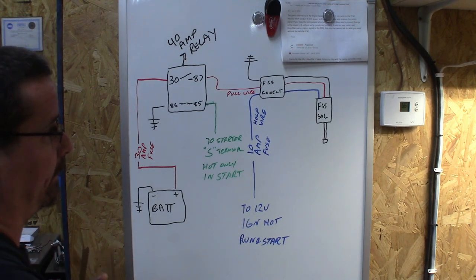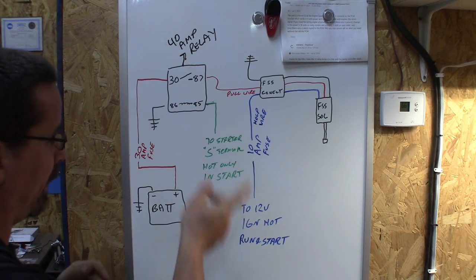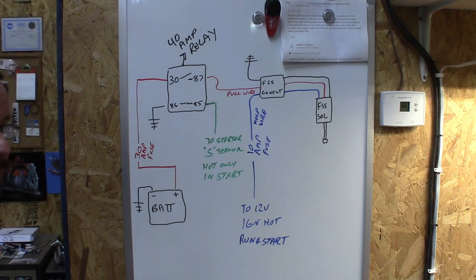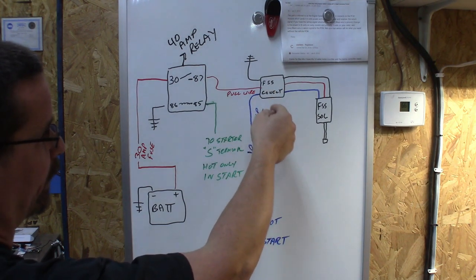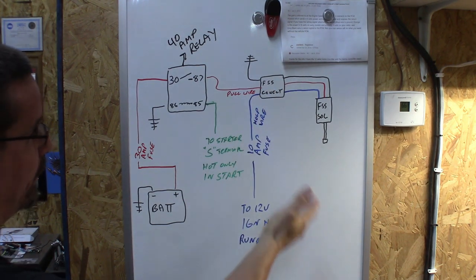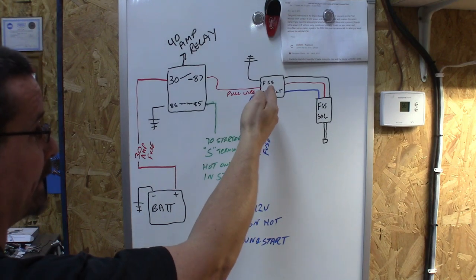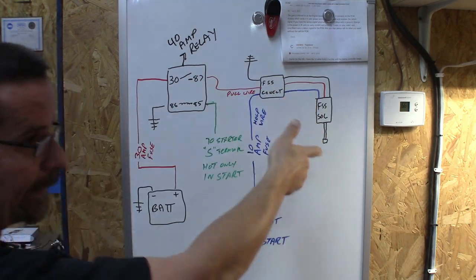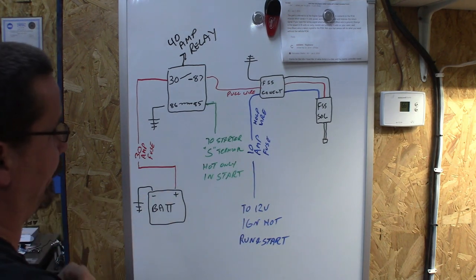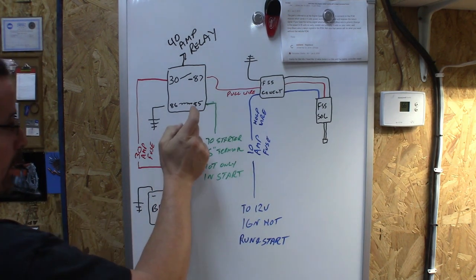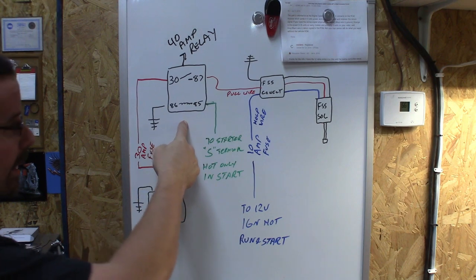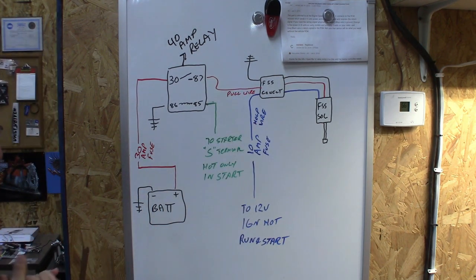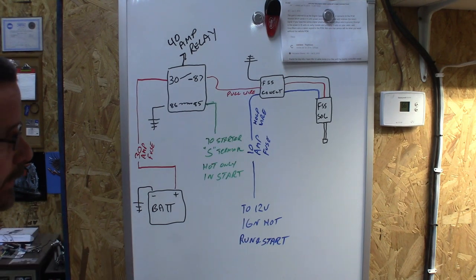And that's pretty much it. A couple fuses, a relay with some good grounds, you're good to go. We were able to use, we had a donor truck naturally so we kept the fuel shut off connector right there. So if we ever have to replace the fuel shut off it plugs and unplugs just like OEM. I even used the factory relay from the donor truck for that fuel shut off solenoid. So that's an option too.